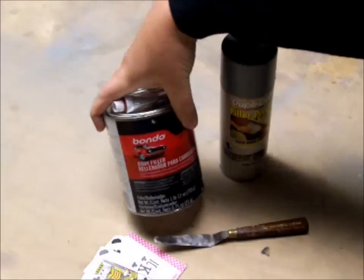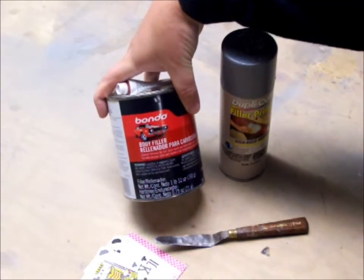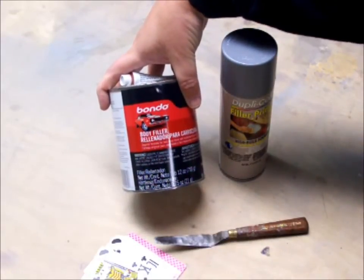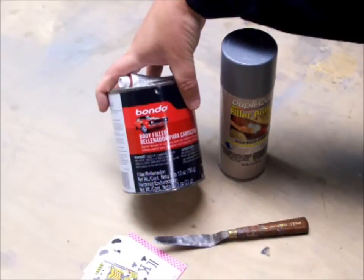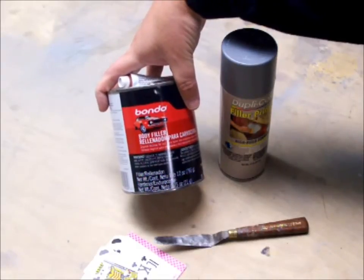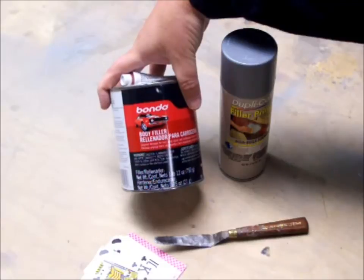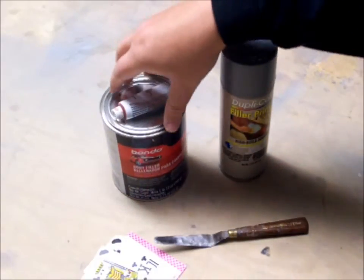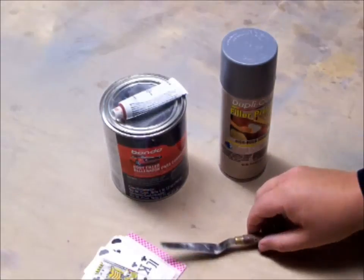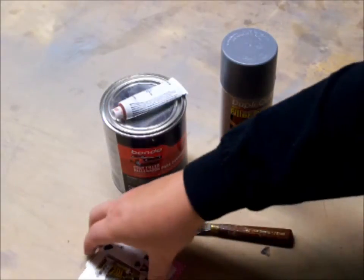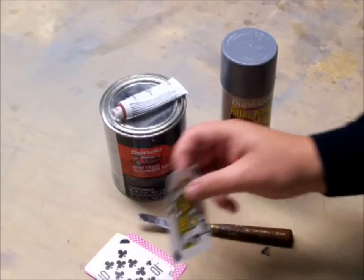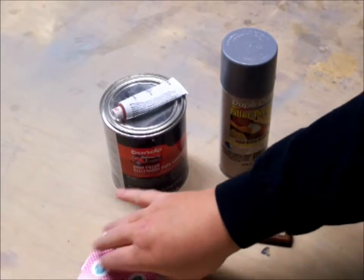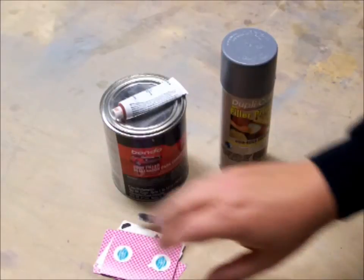I like to use Bondo. A lot of people don't like it because they think it's heavy. But honestly, by the time you sand most of it away, there's not much left. It dries fast and it doesn't shrink as bad as lacquer putty does. To apply it, I use several different tools. Plain old playing cards work really great because they're firm enough to be able to spread things and they have a little give.